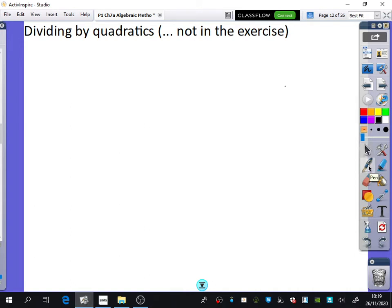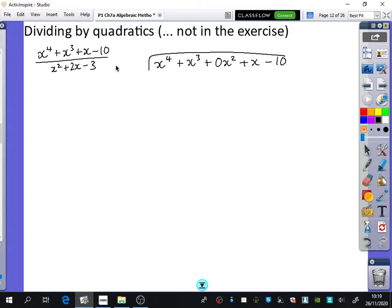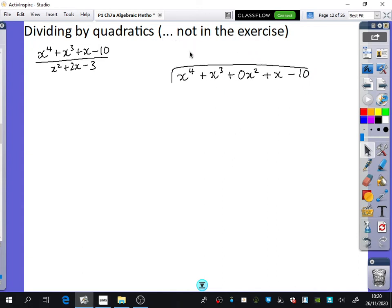So the two that I wanted to have a look at, we're going to look at one of them to begin with. We'll do two though. x to the power of 4 plus x cubed plus x minus 10, divided by x squared plus 2x minus 3. When I write this out, what do I need to be careful about? The 0x squared.